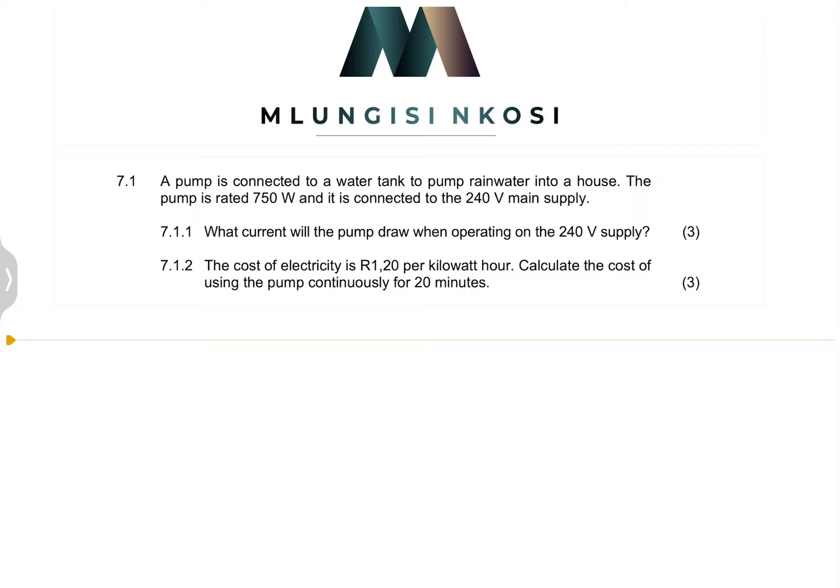So in this case, we're given the power rating of it and as well as voltage. So what we're simply going to do, for our power, we know power is voltage multiplied by current.